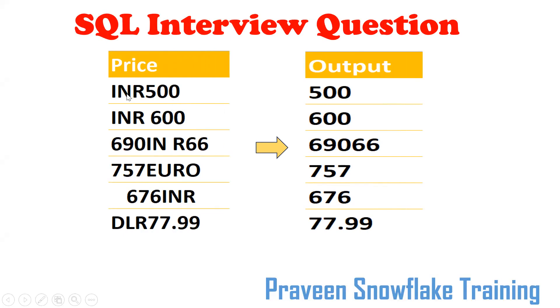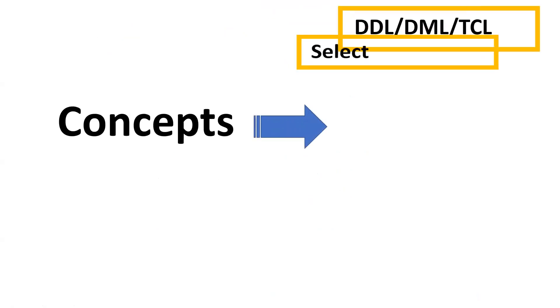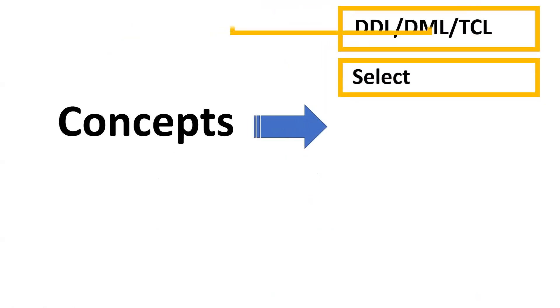So this is my input — it contains alphabets, spaces, decimals, and currency symbols. But I want to get only numbers as output. I want to remove the alphabets and spaces, but keep the decimal point. To understand this concept, you should have a good understanding of: table creation, inserting data, SELECT, TRIM, REPLACE, and REGEXP_REPLACE functions.